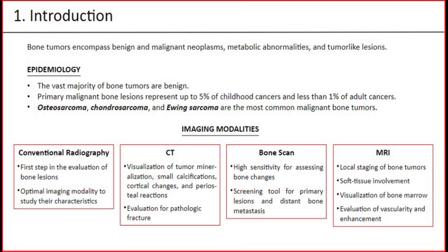We'll begin with an introduction. Bone tumors include benign and malignant neoplasms, metabolic abnormalities, and tumor-like lesions. Epidemiology: the vast majority of bone tumors are benign. Primary malignant bone lesions represent up to 5% of childhood cancers and less than 1% of adult cancers. Osteosarcoma, chondrosarcoma, and Ewing sarcoma are the most common malignant bone tumors.